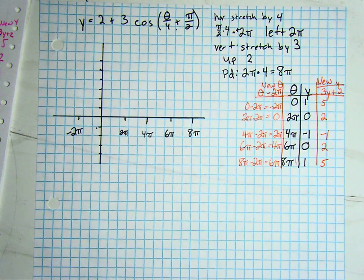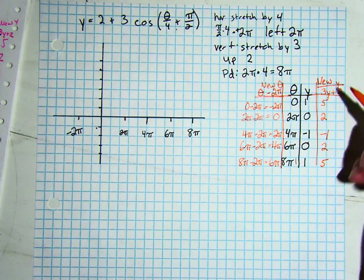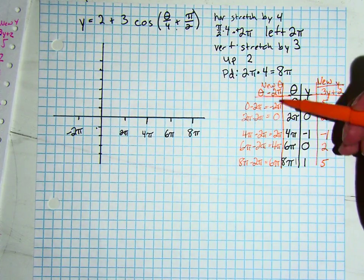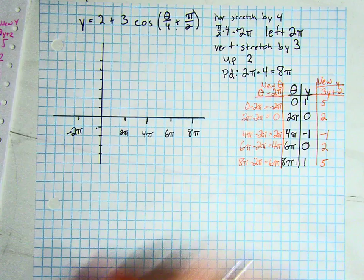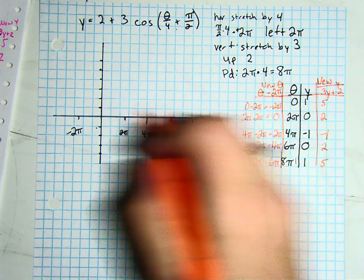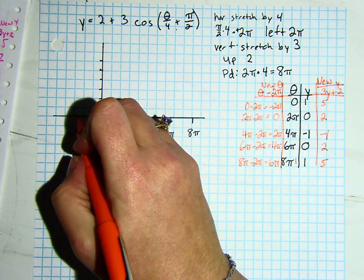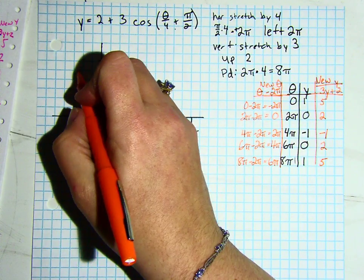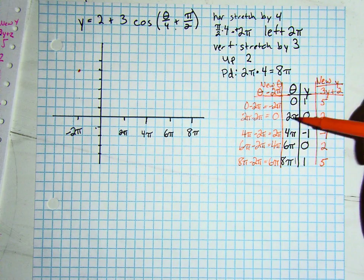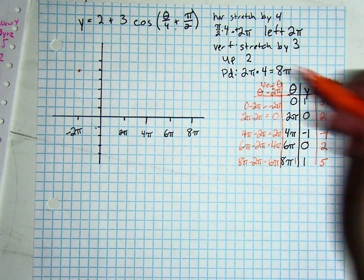Okay, we are now going to plot our new thetas and our new y's. So I have negative 2 pi at 5. So 2, 4, and 5. We have 0, 2. At 0, we are at 2.